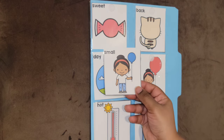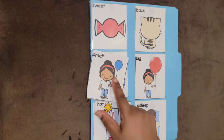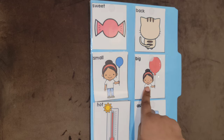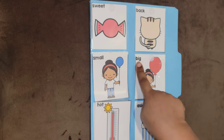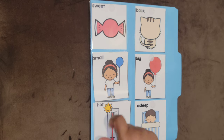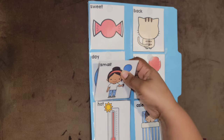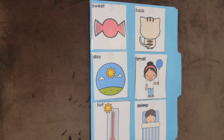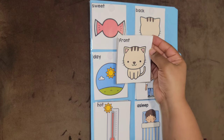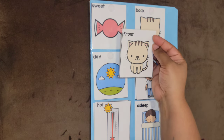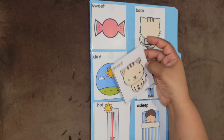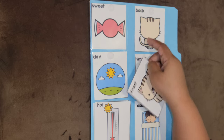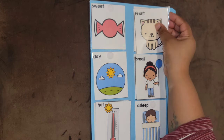I have a little girl and she has a balloon — the balloon is small. This little girl has a balloon and her balloon is big. The opposite of big is small. Meow! Hello kitty cat, I see the front of your face. Hello kitty cat, I see the back of your head. The opposite of back is front.